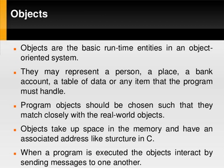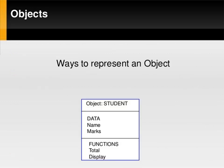The first basic concept of OOP is object. Objects are nothing but runtime entities. They may represent a person, a place, a bank account, a table of data, or any item that the program must handle. Program objects match closely with real world objects. Objects take space in the memory. When a program is executed, the objects interact by sending messages to another object. The representation of an object contains three parts: the first part contains the object name, the second part contains the information about the object called data, and the third part contains the operations of the object called functions.